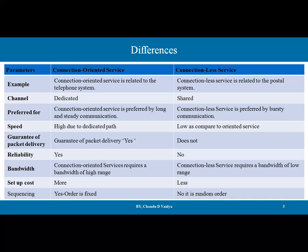Connection-oriented service is preferred for long and steady communication, like a telephone line. Connectionless service is preferred for bursty communication where many packets are available — for example, the internet nowadays uses connectionless service with UDP protocol. Speed is high in connection-oriented due to a dedicated path. Connectionless service does not guarantee packet delivery, whereas connection-oriented service does — making it reliable while connectionless is not reliable.